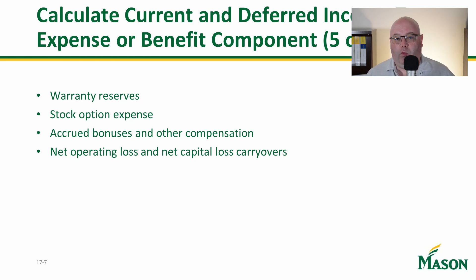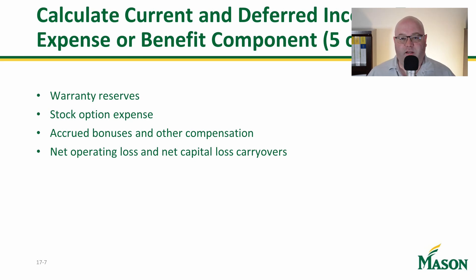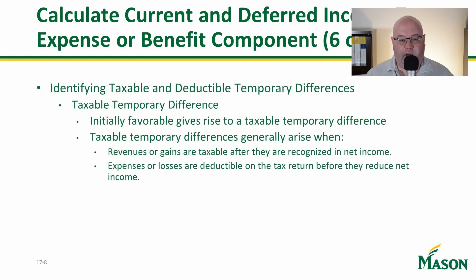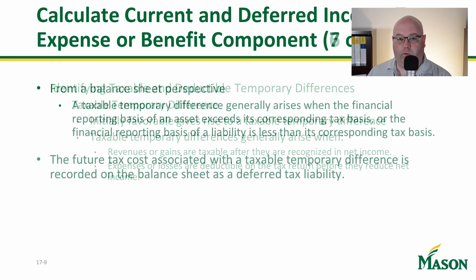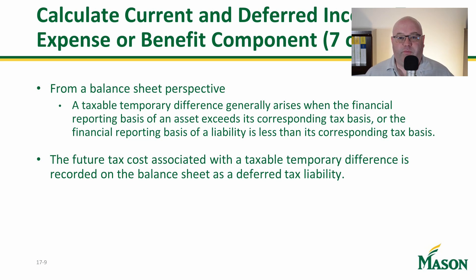Additional temporary differences include warranty reserves. If you have a warranty reserve, you're going to treat that differently under tax than under book, because warranty reserves are more of a financial accounting matter than a tax matter. From a balance sheet perspective, a taxable temporary difference generally arises when the financial basis of an asset exceeds its corresponding tax basis, or the financial reporting of a liability is less than its corresponding tax basis.